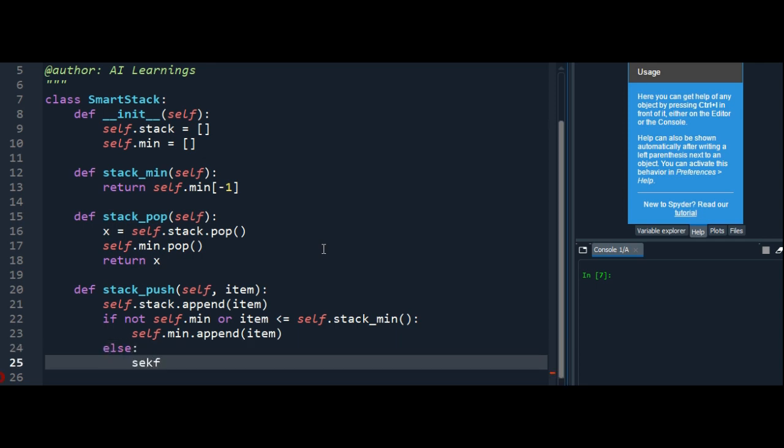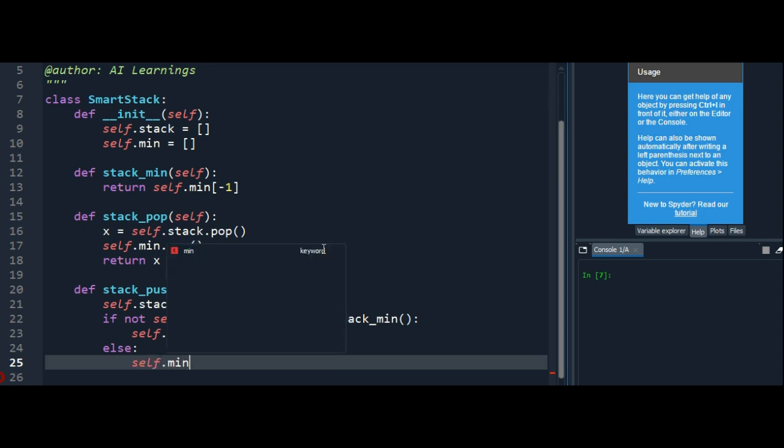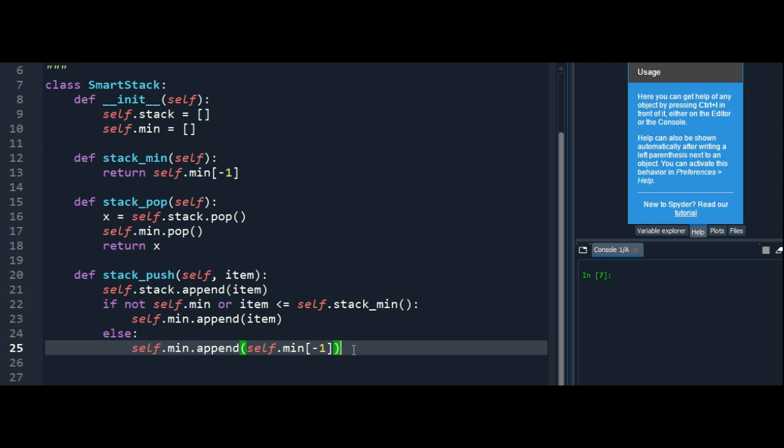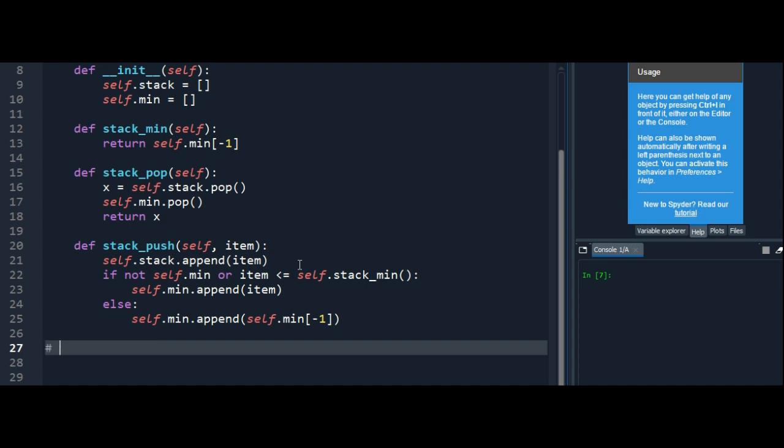Or else, I'll simply append the min stack with the last element of the min stack, which was the earlier one. For example, when I'm adding five, I know that this is greater than one. So this comes in the else condition and I will not append five onto the min stack. Rather, I'll append the last element in the min stack, which is one.